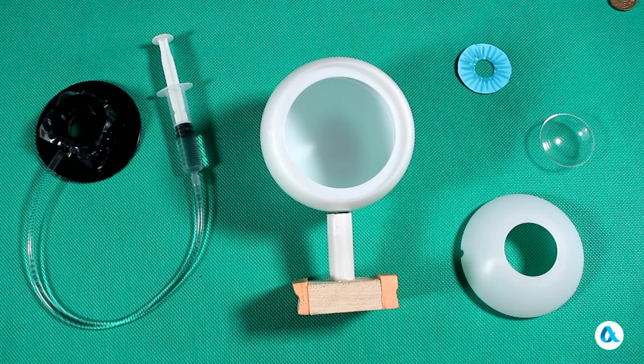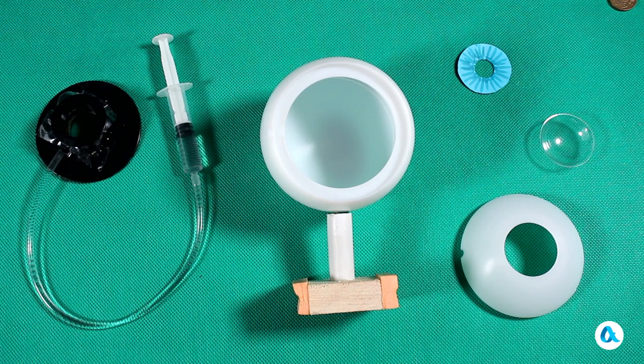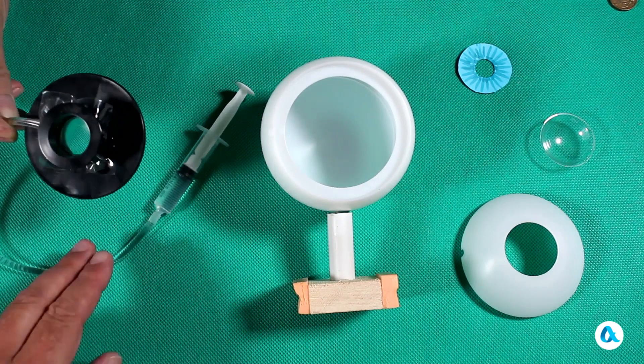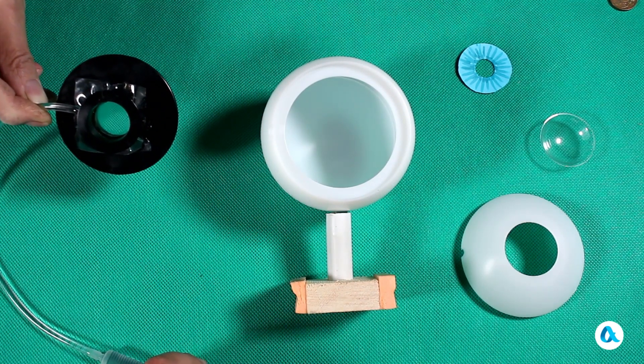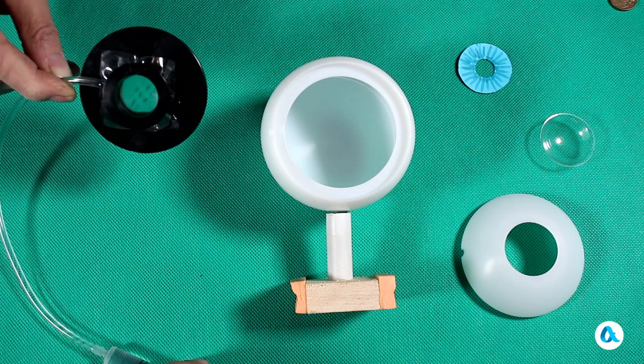We've already familiarized ourselves with the anatomy of the eye, and now we'll be dealing with it like in real physics with a simple model. The main component of this model is a small crystal consisting of two elastic films that are filled with water, which plays a crucial role in its functionality.